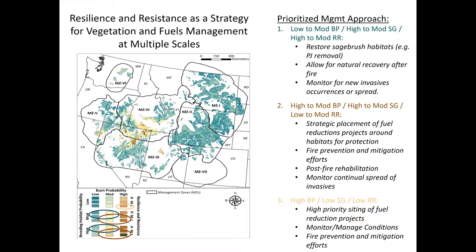Lastly, in areas with high burn probability, low sage-grouse habitat probability, and low resilience and resistance, shown in the peach-colored circle in the key, these should be high priority areas for siting fuel reduction projects. We would continue to monitor and manage conditions within those fuel reduction projects, and also prioritize fire prevention and mitigation efforts in these areas to help reduce human-caused ignitions.